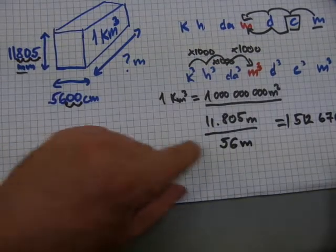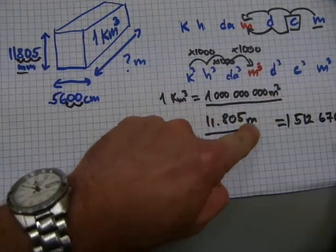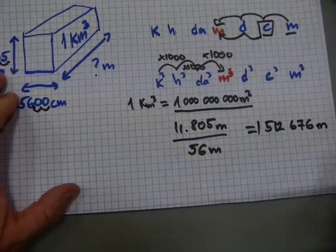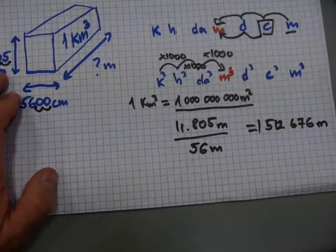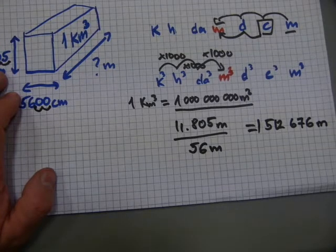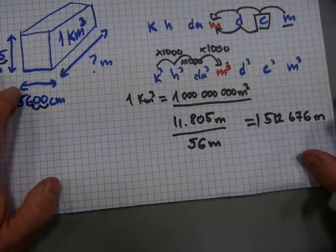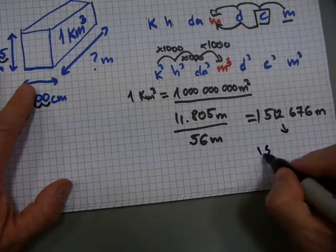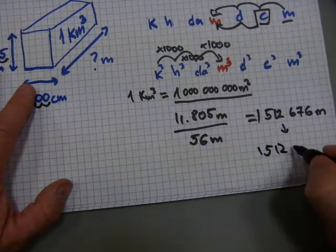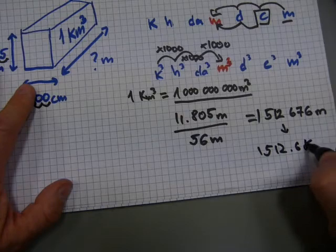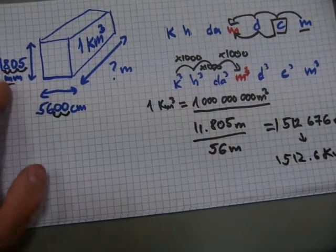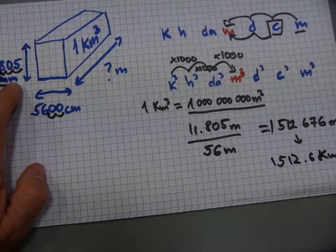So that's one million meters, one and a half million meters. I'm going to do a quick conversion on this one into kilometers. That's 1,512.6 kilometers. For this kind of swimming pool, your country may not be long enough.